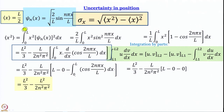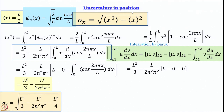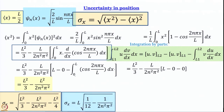Now let us work out the expression under the square root sign: the average value of x² minus the square of the average value of x. We work it out and then put it under the square root sign. The final answer we get is L multiplied by the square root of (1/12 minus 1/(2N²π²)).